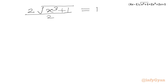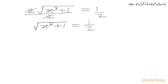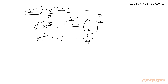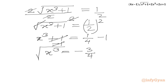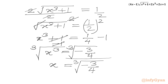Let us divide by 2 on both sides. So √(x³ + 1) = 1/2. Now we have a square root in LHS; we will consider squaring both sides to remove the square root. So square root and square cancel out, giving x³ + 1 = 1/4. We subtract 1 from both sides, so x³ = -3/4. Now taking the cube root of both sides for real values of x, we get x = ∛(-3/4). This is our first real solution.